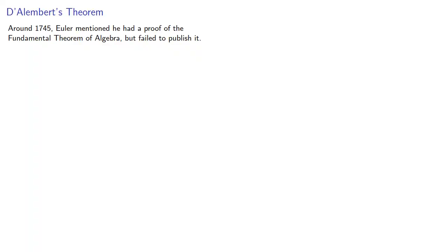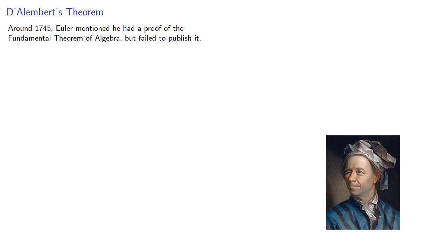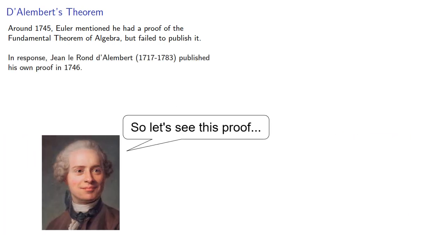Around 1745, Euler mentioned he had a proof of the fundamental theorem of algebra but failed to publish it. In response, Jean-Laurent d'Alembert published his own proof in 1746.